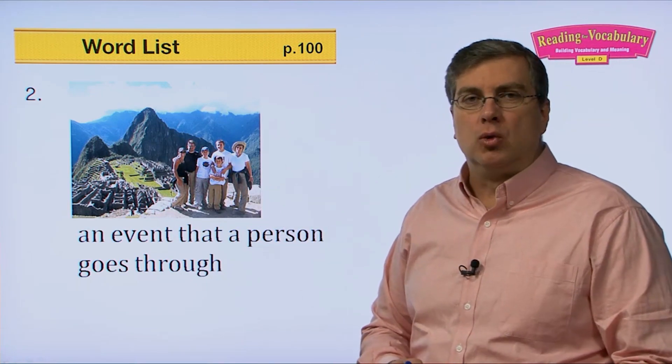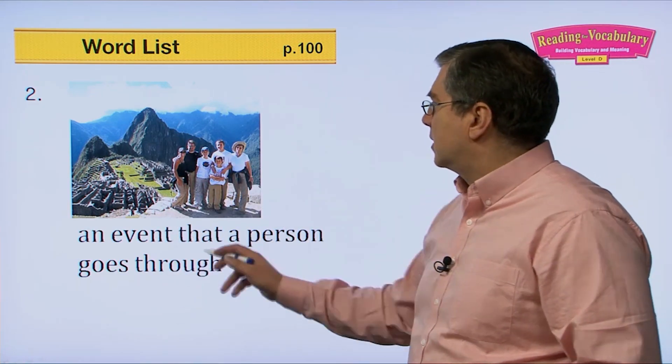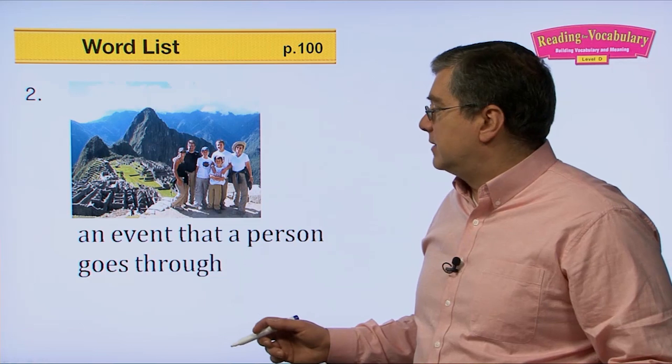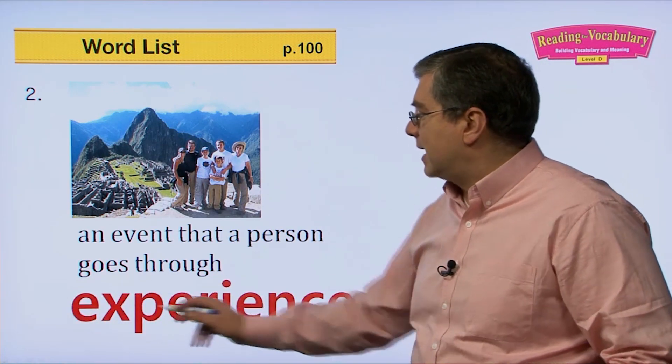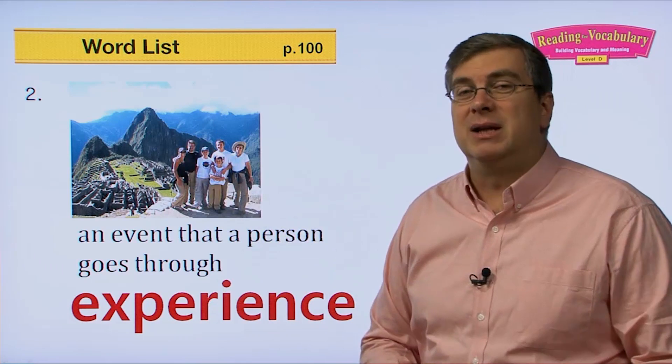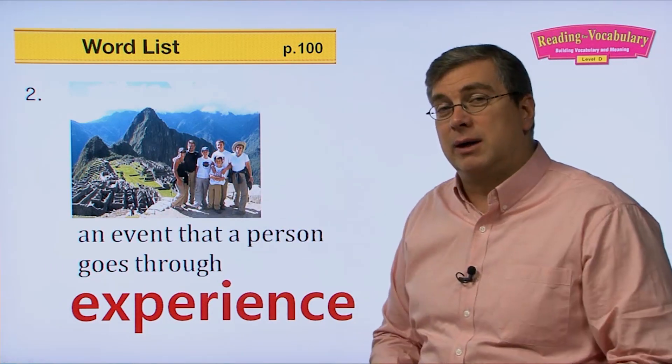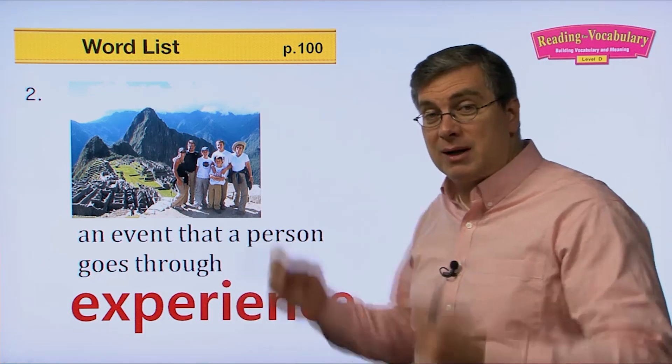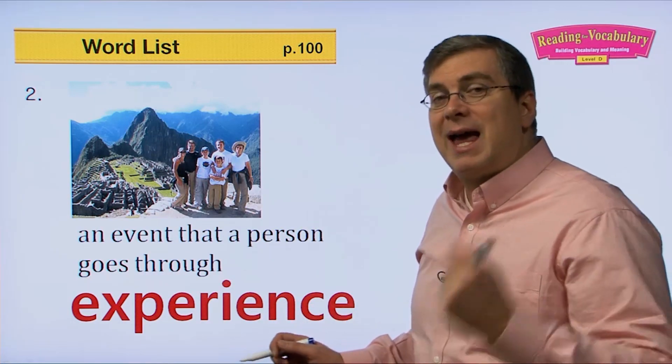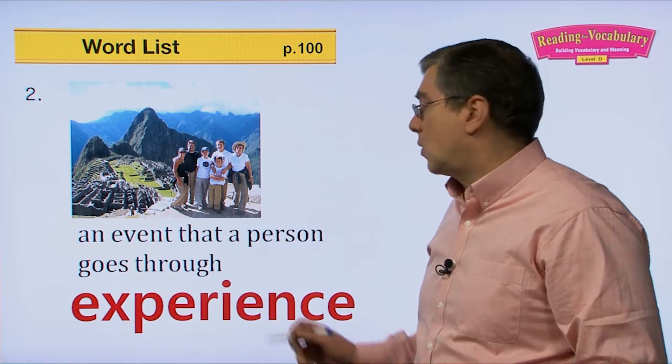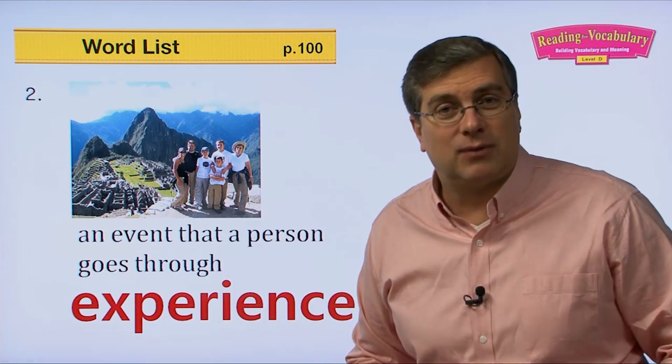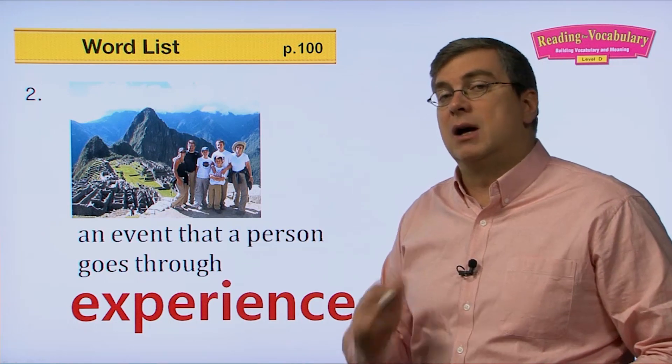Do you know this place? Machu Picchu. This is an event that a person goes through. If you go visit a world famous place like this, what do you say? It's an experience. So if you go and see Machu Picchu in Peru, or you go see the pyramids in Egypt, or you go see the Eiffel Tower in Paris, France, that is an experience that you will remember. So probably you have good experiences of traveling. Maybe your family has taken vacations to different places.